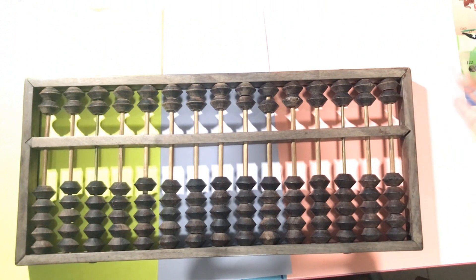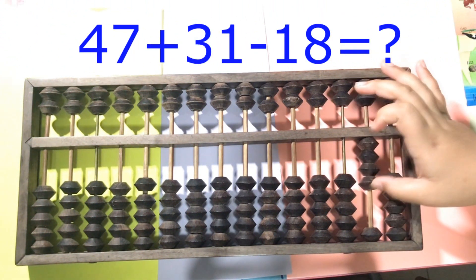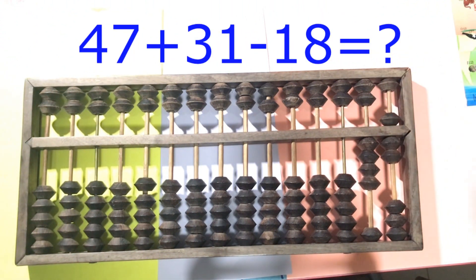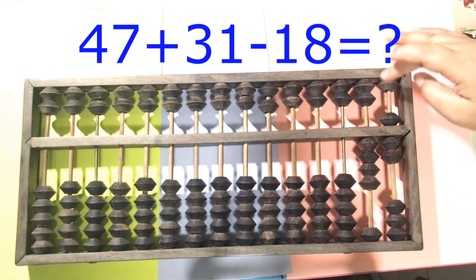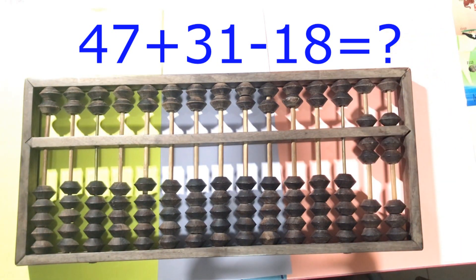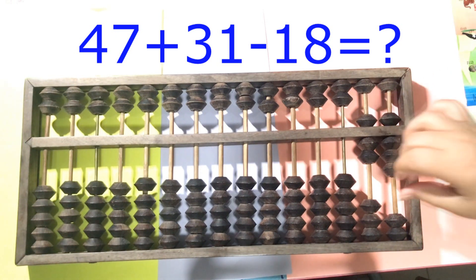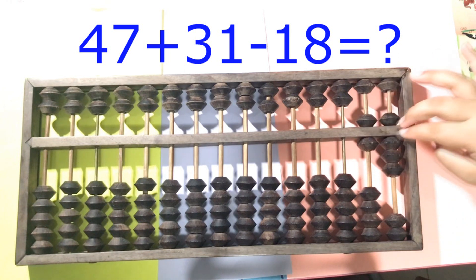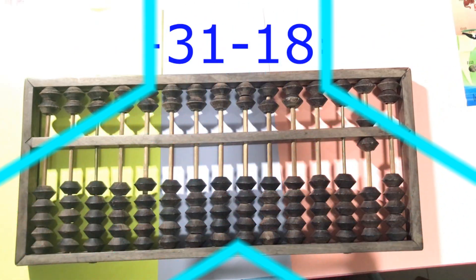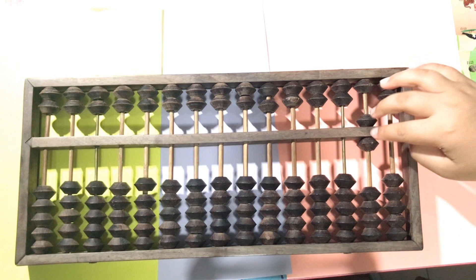The next one: 47 plus 31. We don't have 3 yet here. So again, we plus 5 and minus 2 and plus 1 here. And then minus 18 equals 60.